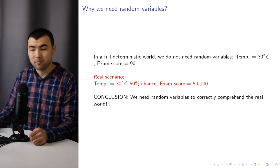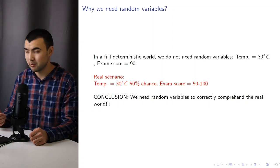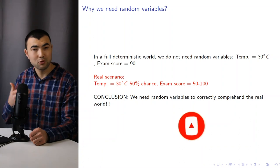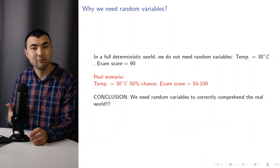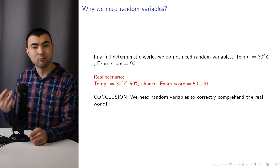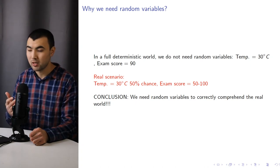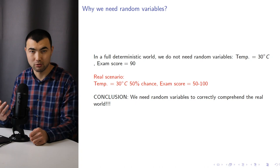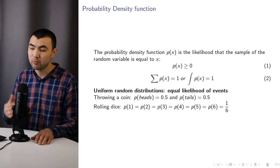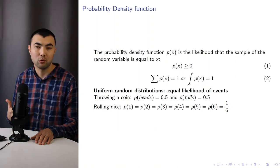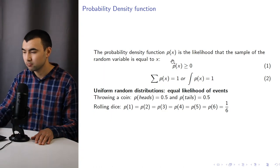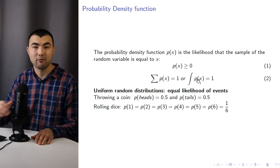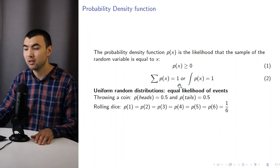Why do we need random variables? In a fully deterministic world, we don't need to use random variables — for example, the temperature is 30 degrees or the exam score is 90 points. However, it is hard to predict the future, and in a real scenario the temperature might be 30 degrees with only 50% chance, and the exam score could be between 50 and 100. This means we need to use random variables to correctly grasp the real world. In mathematical terms, we use the probability density function p(x) to define the likelihood of events and samples. p(x) is always greater than 0, and the sum of p(x) equals 1. For continuous random variables, we use integration instead of summation.